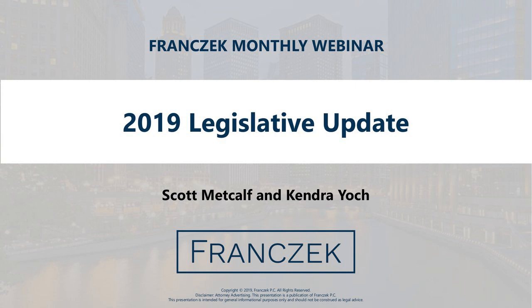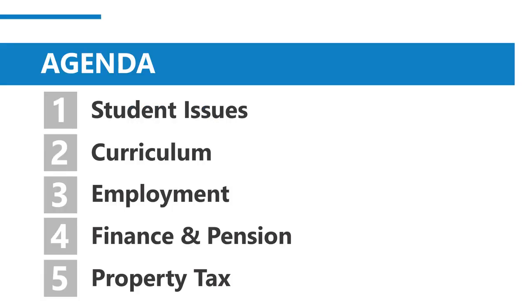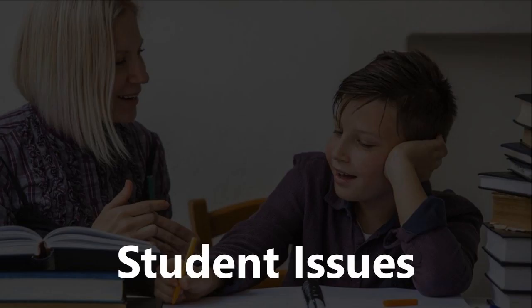Today's agenda has five items — I'll call it five and a half — including student issues, curriculum issues, employment issues, finance and pension issues, and property tax issues. The 5.5 issue is school business operations. The first thing we're going to talk about is student issues in general.